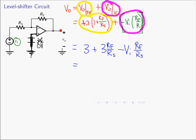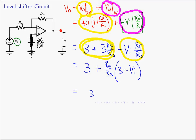Cleaning up further, we can factor: Vout equals 3 plus RF over RS times open-parenthesis 3 minus VI close-parenthesis. The output voltage has the input voltage scaled, but we're also adding to it a constant — 3 times (1 plus RF over RS) is a constant — and then this is the output voltage scaled. This is why it's called the level shifter: the output voltage becomes a scaled version of the input, but with a constant added, basically shifting the level of the output.